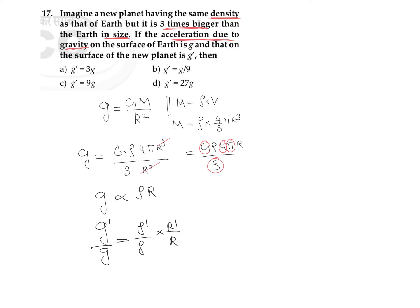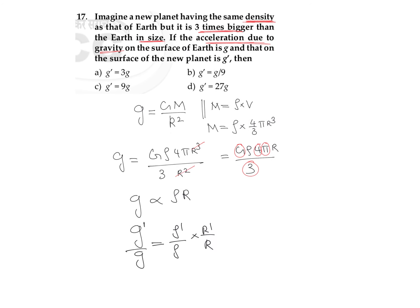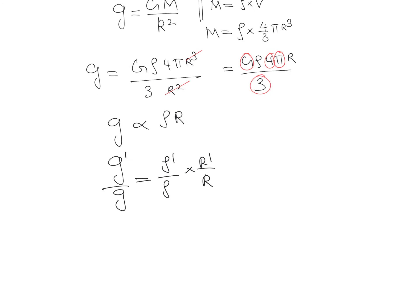Now we can put the values. In the question it is given that the density is also the same. So we can further write it as g is directly proportional to R. We can write g dash divided by g is equal to R dash divided by R because in the question even density is given as same.